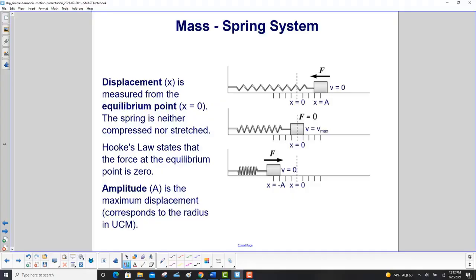Displacement x is measured from the equilibrium point, right there, where x is equal to zero. The spring is neither compressed nor stretched. Hooke's Law states that the force at that equilibrium point is zero, because F is equal to minus kx, x is zero, force is zero.